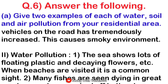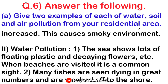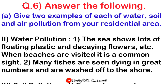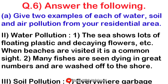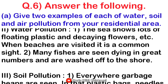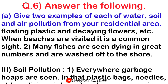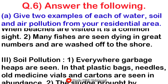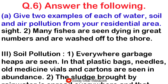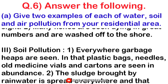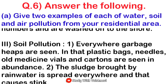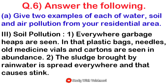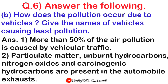For water pollution: first example — the sea shows lots of floating plastic and decaying flowers when beaches are visited, which is a common sight. Second example — many fishes are seen dying in great numbers and are washed off to the shore. For soil pollution: first example — everywhere garbage heaps are seen, with plastic bags, old medicine packaging, glass, and cartons in abundance. Second example — the silt brought by rainwater is spread everywhere and causes land degradation.